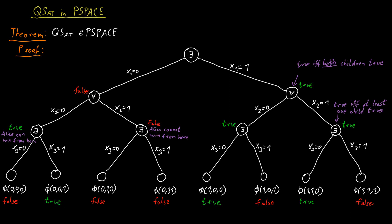This way, we evaluate the entire tree from the bottom up and determine the value of the root. The root value is exactly the answer to our question — it indicates whether Alice has a winning strategy or not. Once we determine that value, we are done.